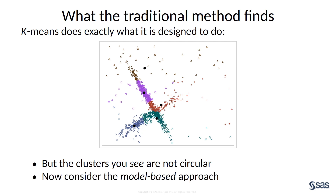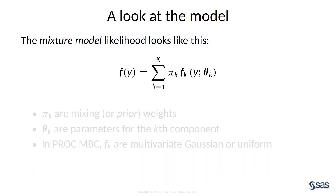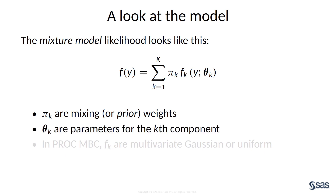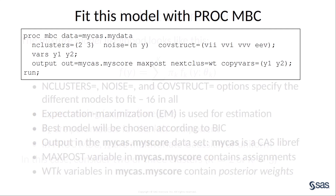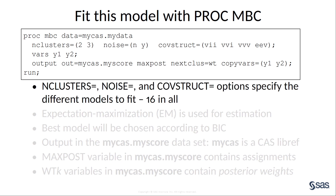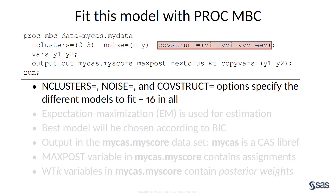Now let's see how model-based clustering approaches this problem. First, look at the model. Here is the general mixture model likelihood. The pi-sub-K parameters are called the mixing weights. The theta-sub-K represent parameters for the K-th component in the model. The F-sub-K define the distribution for the K-th component. In PROC-MBC, these distributions are either multivariate Gaussian or uniform. The big K value indicates the number of components in the model, and because you are using this for model-based clustering, this also represents the number of clusters. For the case considered, two or three clusters seem appropriate. Here is the PROC-MBC syntax for fitting this model. There are three options that control the models that will be evaluated: the n-clusters option specifies a list of values for the number of multivariate Gaussian clusters (two or three); the noise option specifies whether the model should include a uniform noise component; and the covestruct option specifies the covariance structure to use in the model.